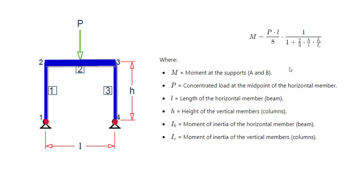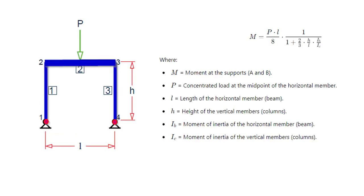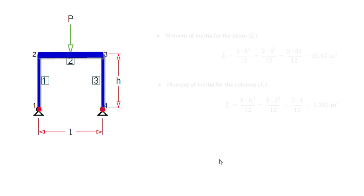As you can observe, we have a beam with a different size and a column with a different size. We will switch to the manual calculation part based on the given equation. In order to work out the equation, first of all you need to work out the moment of inertia for your beam as well as for the column. We will work out the moment of inertia for each element.